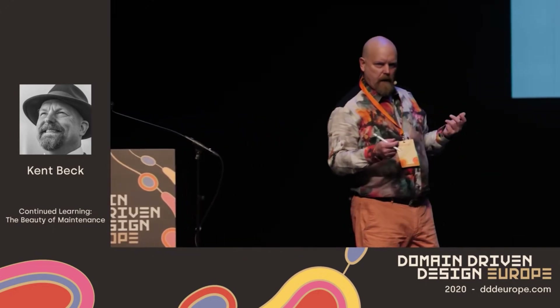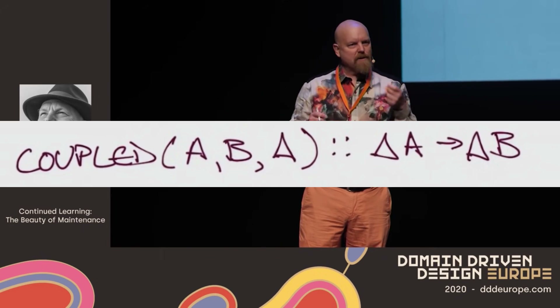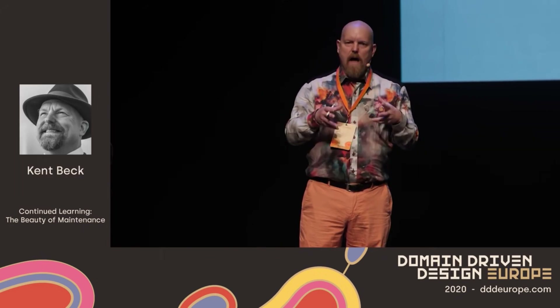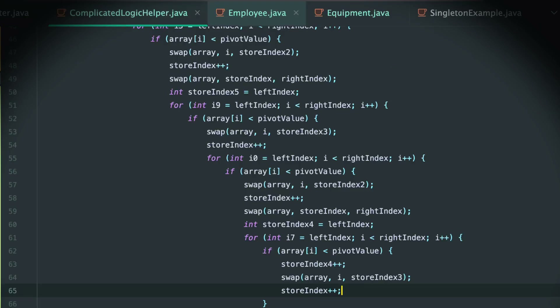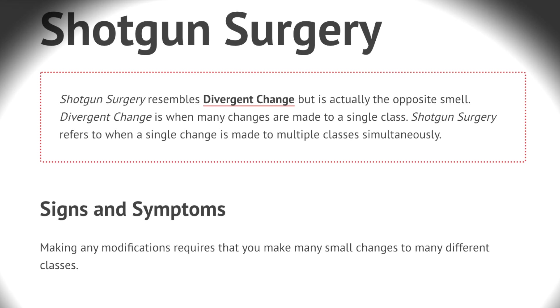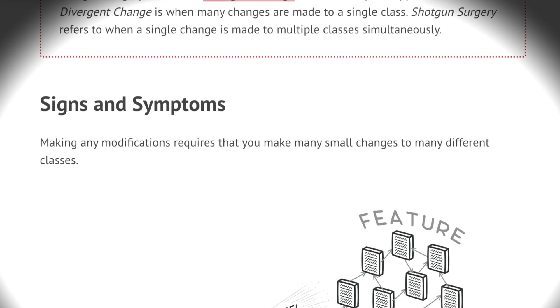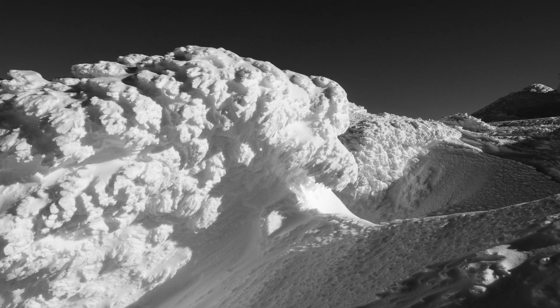Here's where coupling, as defined just here, is really helpful. What makes changes really expensive is not just the change itself — it's: I change this, so I have to change those, so I have to change those, so I have to change those. It's this cascading effect. If you've looked at complexity theory, you're going to recognize a power law distribution here.